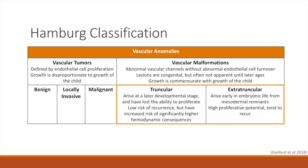In contrast, extratruncular vascular malformations arise earlier in embryonic life from mesodermal remnants that retain high proliferative potential. Because of this, these lesions have increased risk of recurrence.